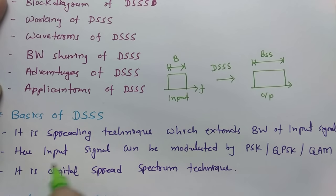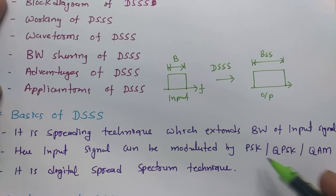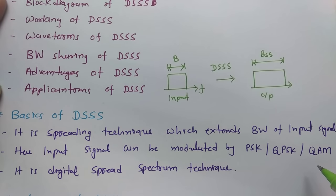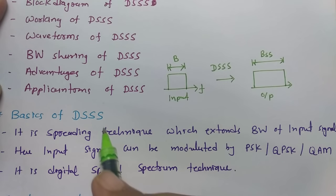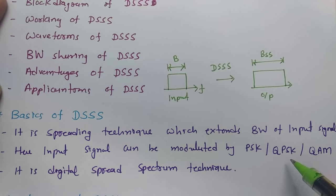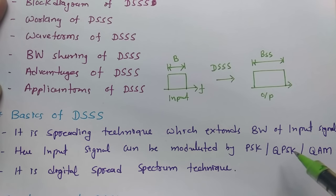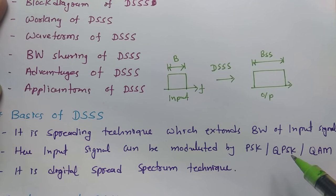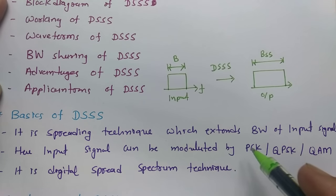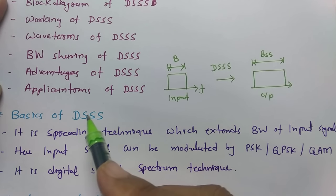The input signal can be modulated using PSK, QPSK, and QAM. In the previous session on Frequency Hopping Spread Spectrum, we could only use FSK modulation. But in DSSS, we can use Phase Shift Keying, Quadrature Phase Shift Keying, and Quadrature Amplitude Modulation — techniques which are more efficient than FSK used with FHSS. This is one basic advantage of DSSS.